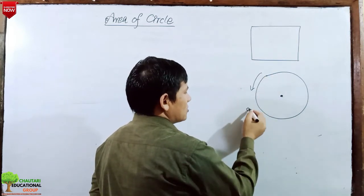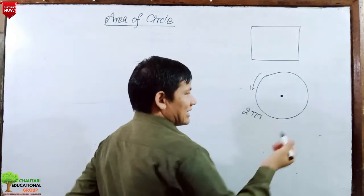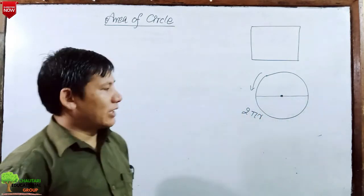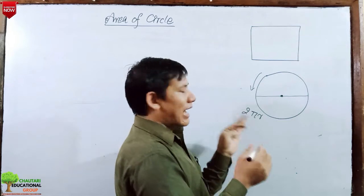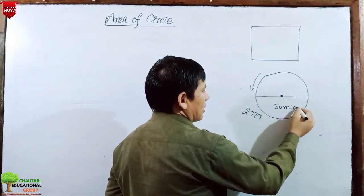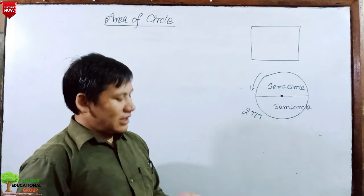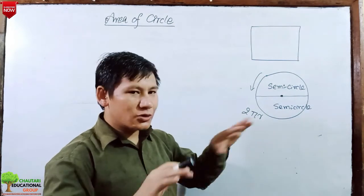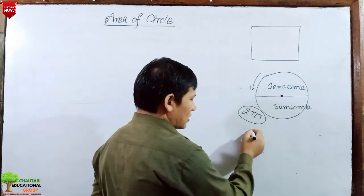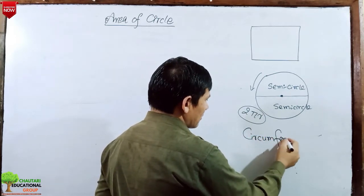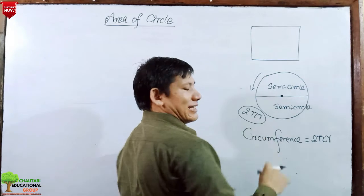The circumference of a circle is two pi r. A circle is divided by its diameter into two semicircles — that means two equal halves. This semicircle and this semicircle are the two equal halves divided by the diameter. So the circumference of a circle is 2πr.